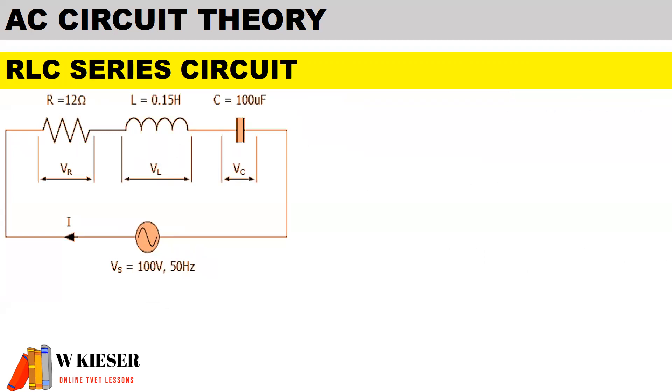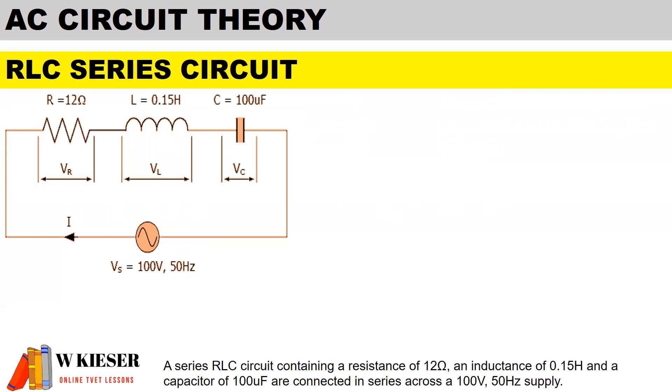Okay here's our example for an RLC series circuit. We have a resistor of 12 ohms, an inductor of 0.15 Henry and a capacitor of 100 microfarad. A series RLC circuit containing a resistance of 12 ohms, an inductance of 0.15 Henry and a capacitor of 100 microfarad are connected in series across 100 volt 50 hertz supply. And we first have to calculate the total circuit impedance.